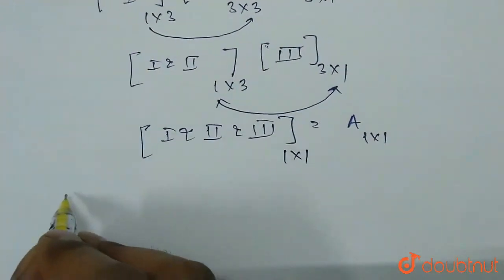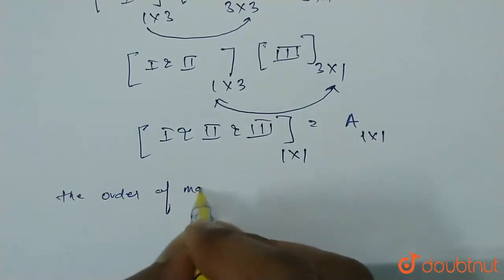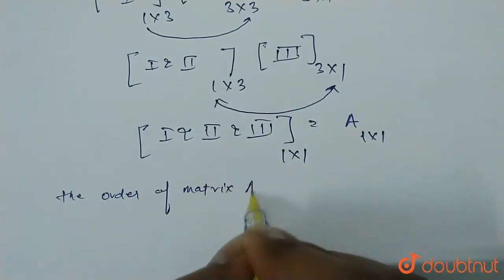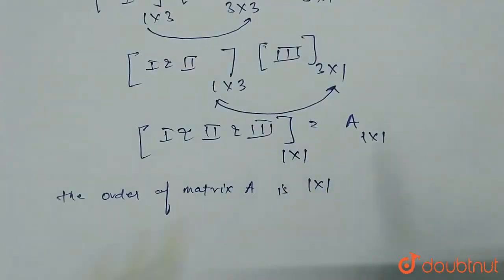So, the order of matrix A is 1 cross 1, means 1 row and 1 column.